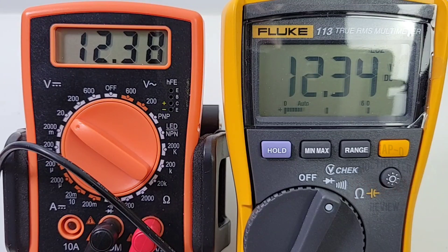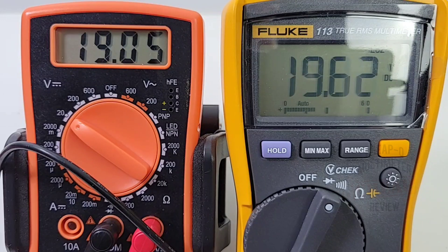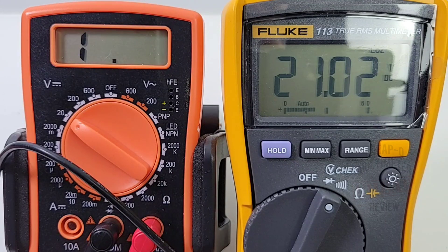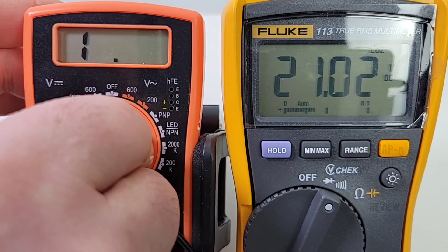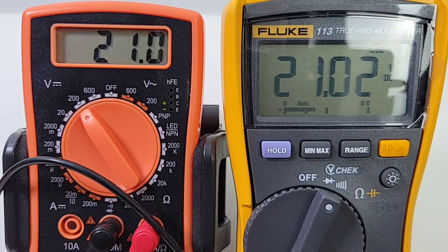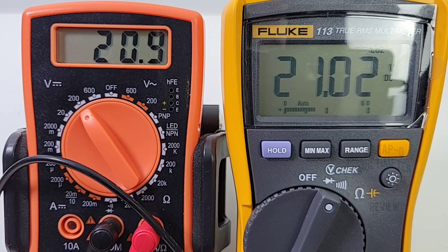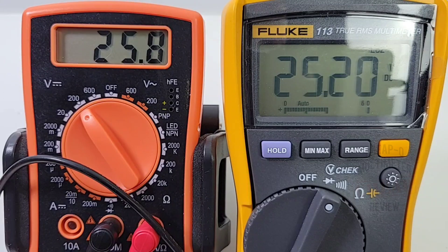Let's hit 21 volts even. There we go, and we are over limit on the Rushoi, so we got to take it up because it is non-auto ranging. 21 even and 20.9 for the Rushoi, 21.02 for the Fluke.